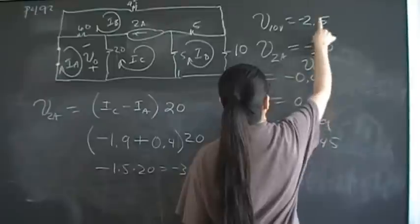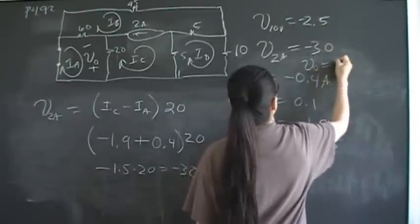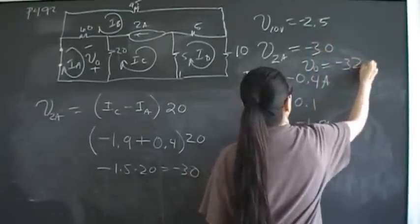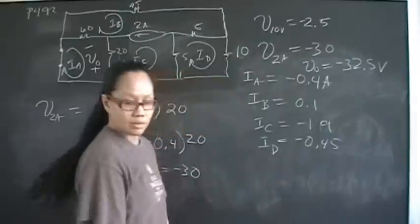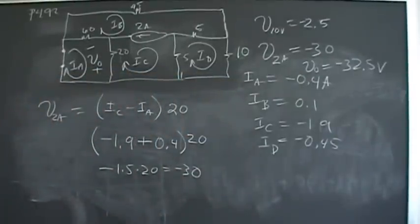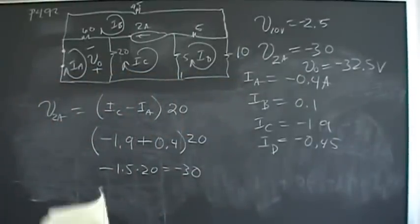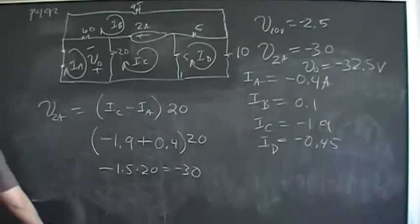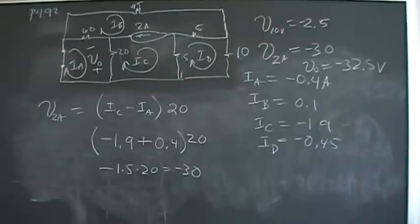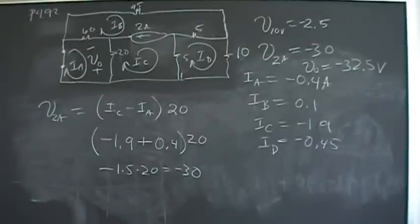VL is the sum of both contributions: V10V + V2A = −2.5 + (−30) = −32.5 volts. And that is problem number 92. If you got help from this video, please like the Facebook page and share the video. Good luck in your studies.